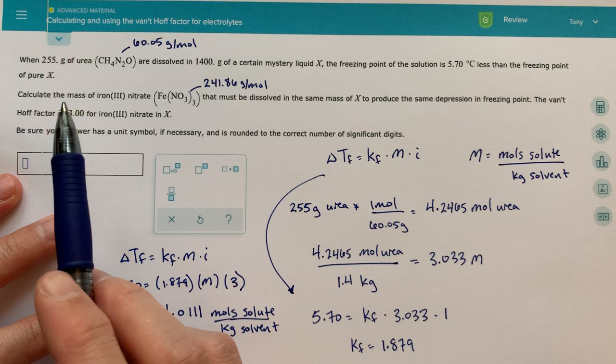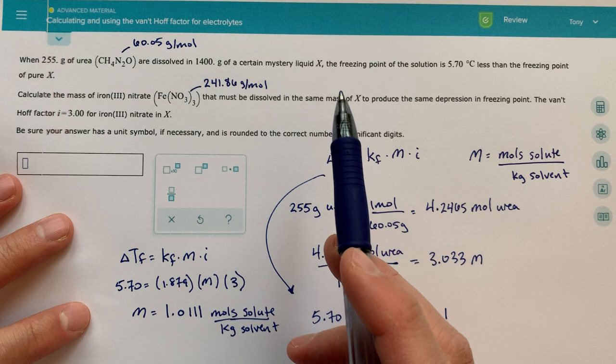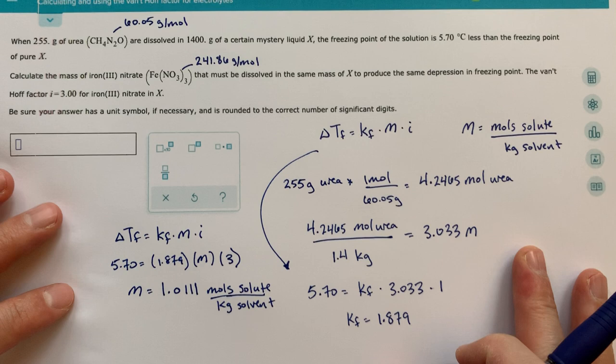Now, basically from here, we need to use this information in order to figure out what the mass of iron nitrate is that we're going to need. We also have the molar mass here, but first we're going to need to figure out the number of moles that must have been dissolved in this same mass of X in this 1400 grams of our mystery liquid X. So basically I'm going to start doing some dimensional analysis.